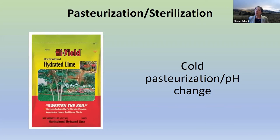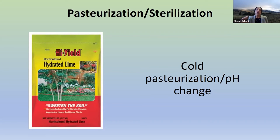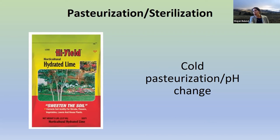I use cold pasteurization — a type of pH-change pasteurization. The product I use is hydrated lime, which you can buy at some garden centers. It significantly raises the pH of the substrate, making it more alkaline, and helps shock and kill off a lot of those competing bacteria and fungi.